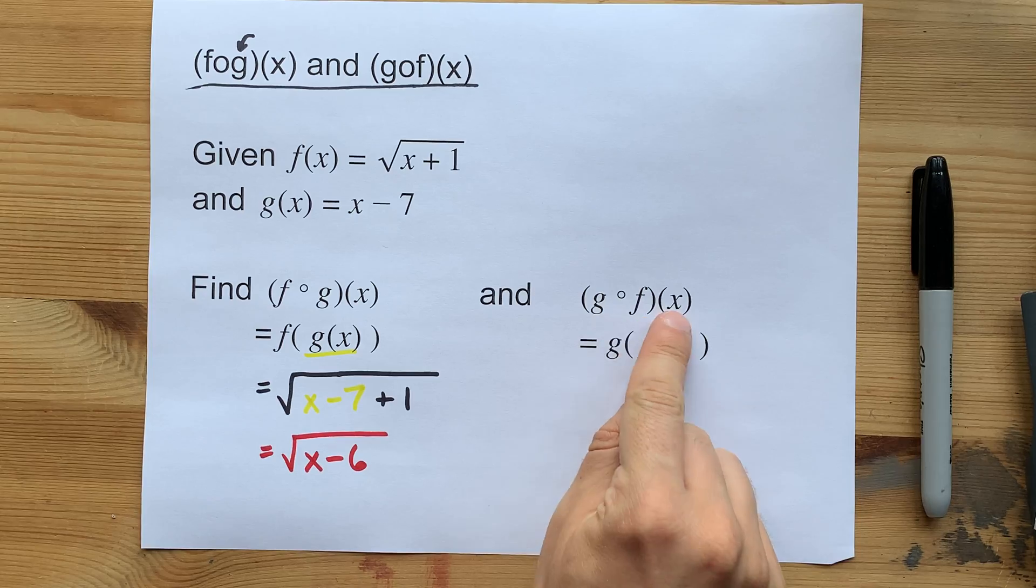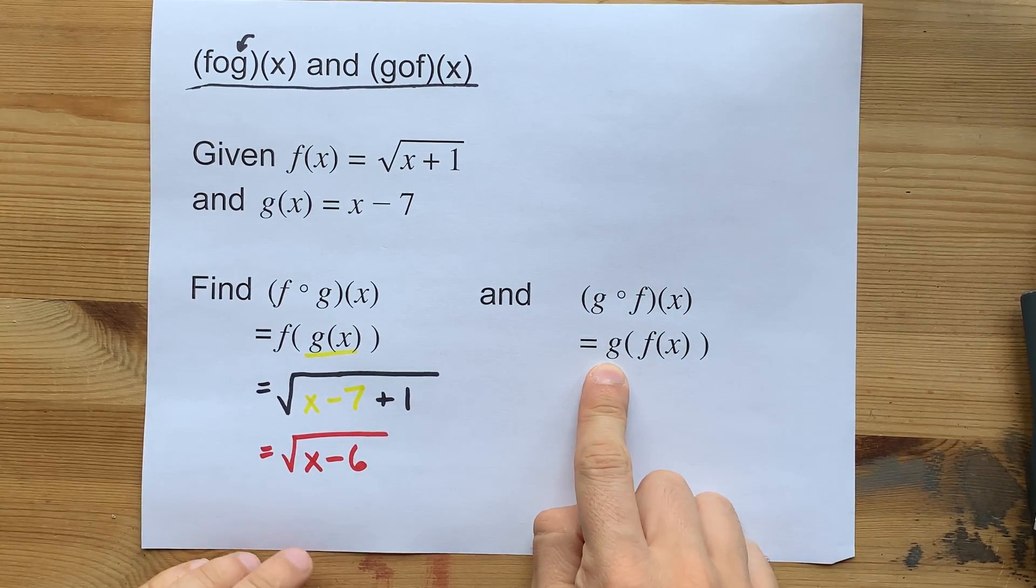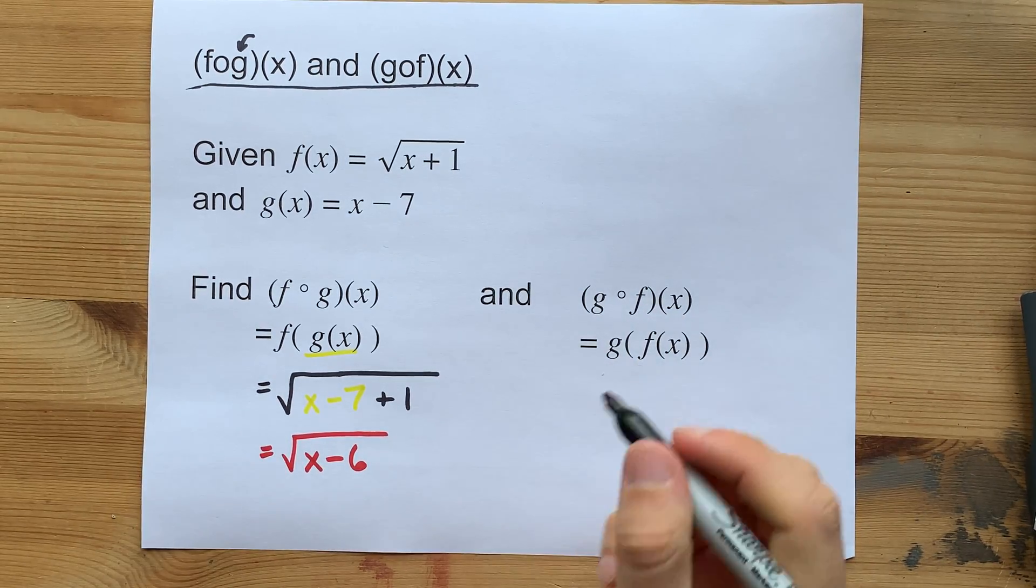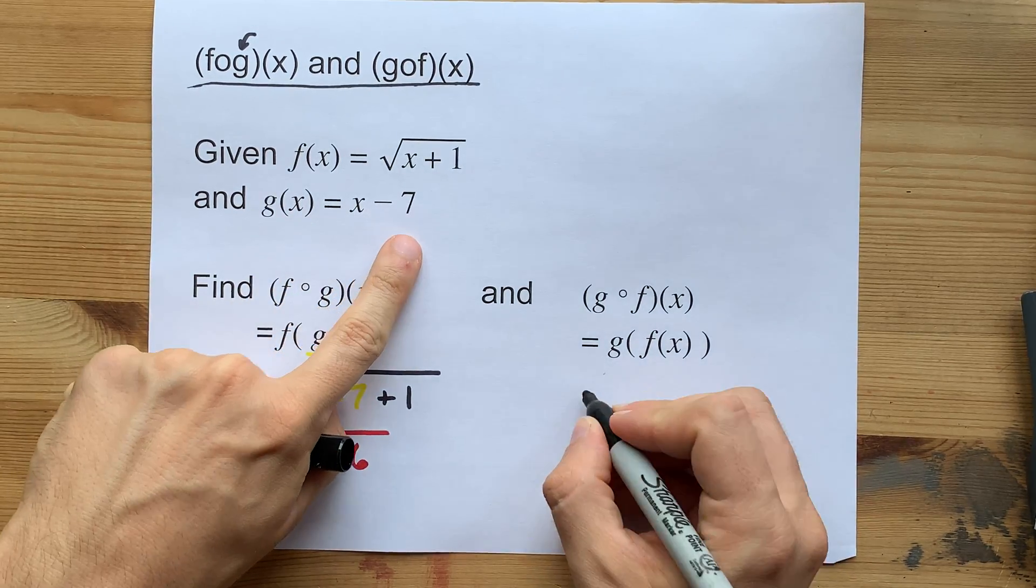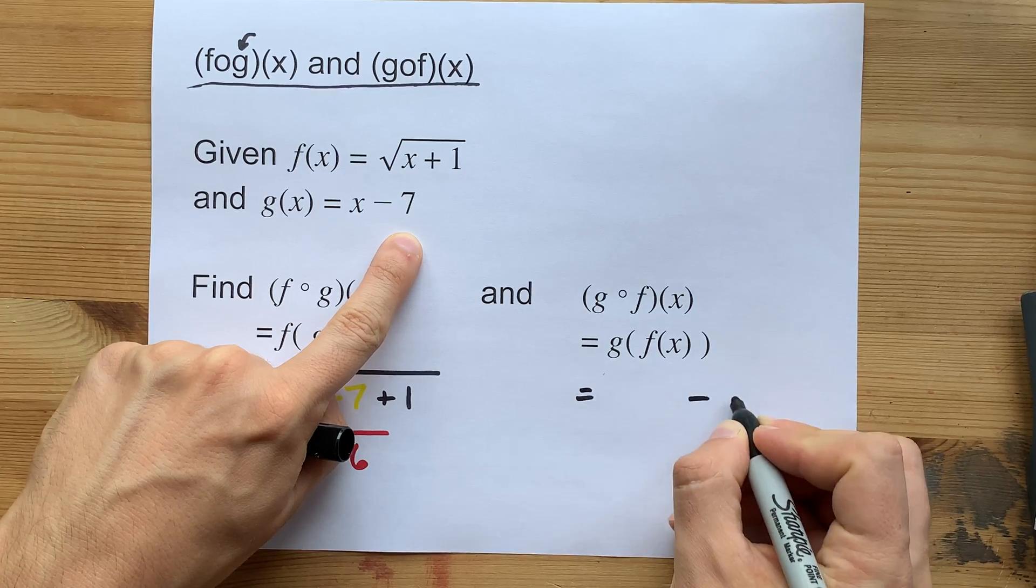Likewise, g of f of x means take g and then replace x with the whole f. g is x minus 7. Copy x minus 7.